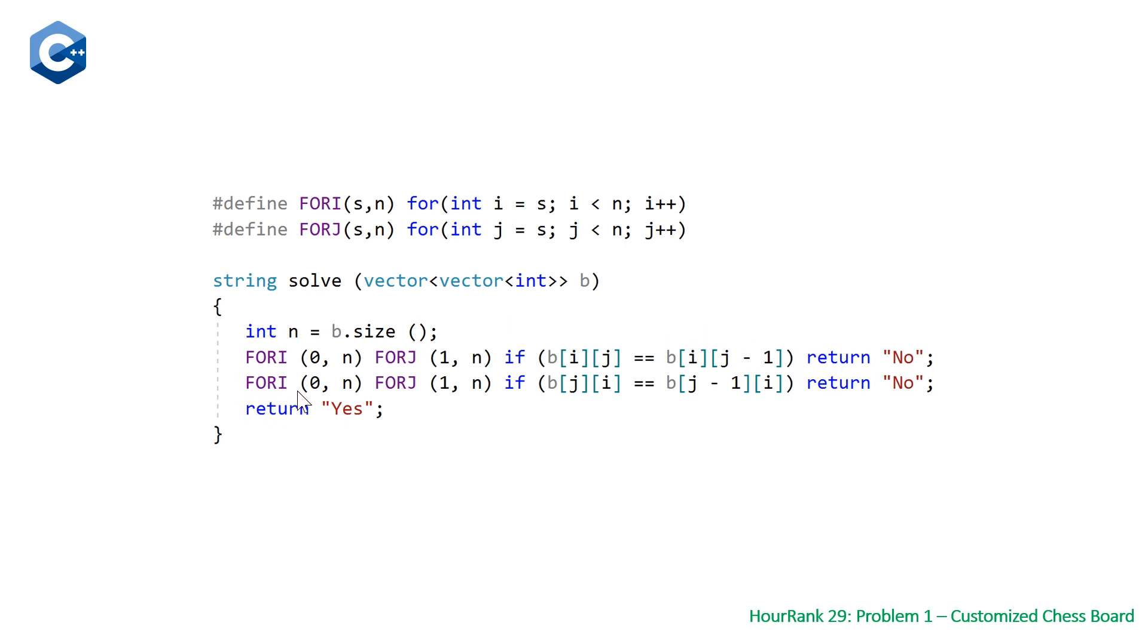Once we do this, we go to our column major traversal, same idea. But now we're just swapping where i and j is. So j is going to be for the rows and i is, or sorry, j is going to be now for the column and i is going to be for the row. And we do the same thing just looking at j and then j minus one. If at any point these two are equal, we return no.